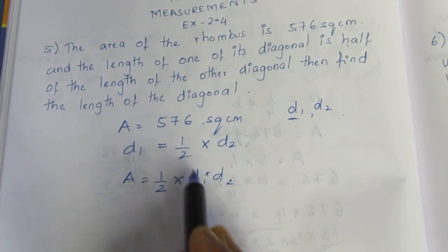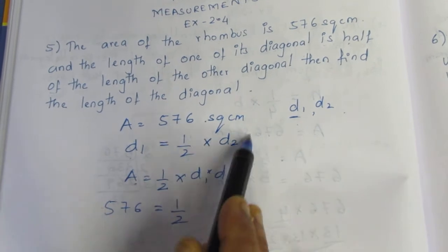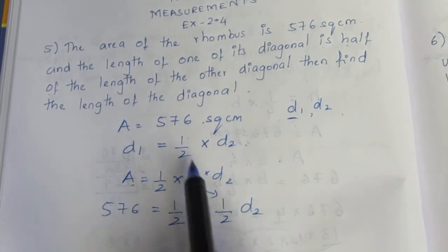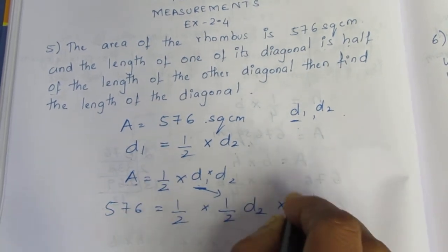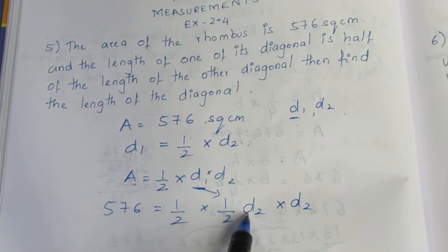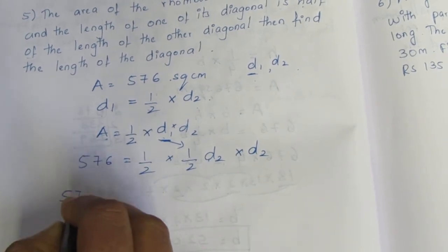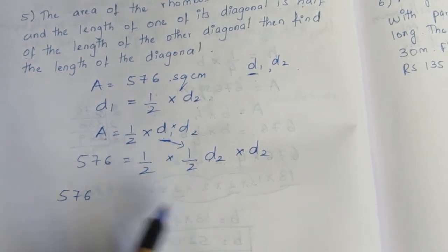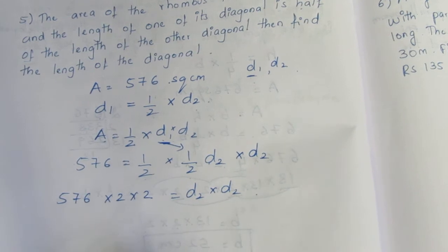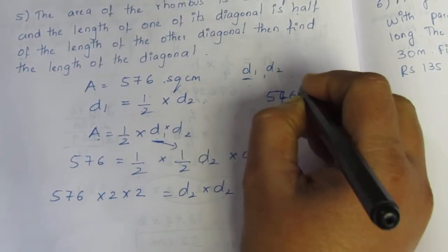Since D1 equals one-half of D2, we substitute into the formula. The area is 576, so 576 equals one-half into D1 into D2, with D1 replaced by one-half D2. We will use prime factorization to solve this.